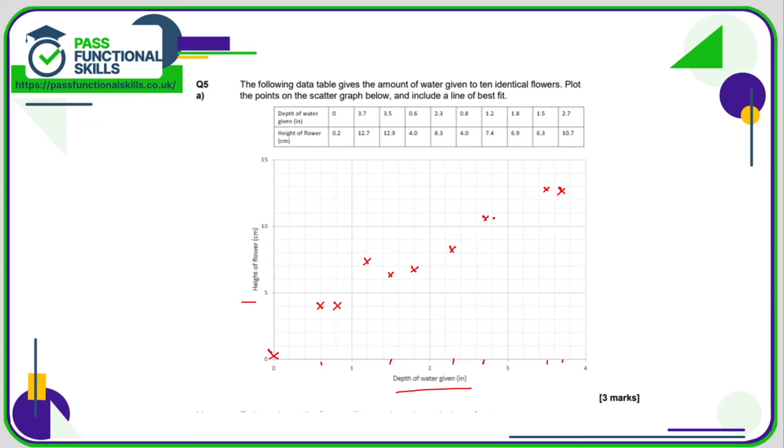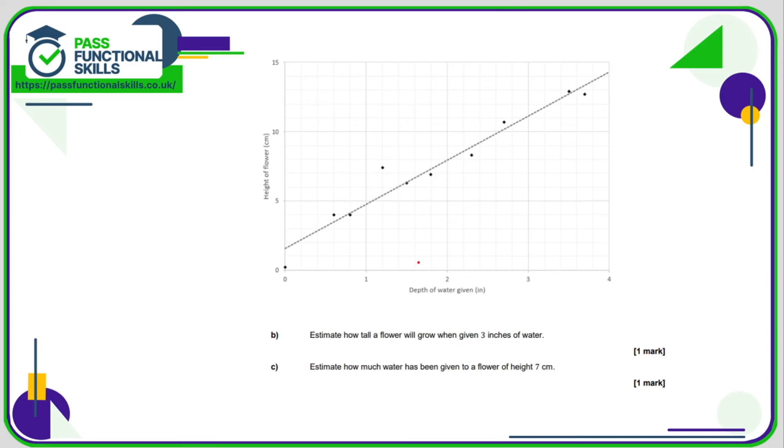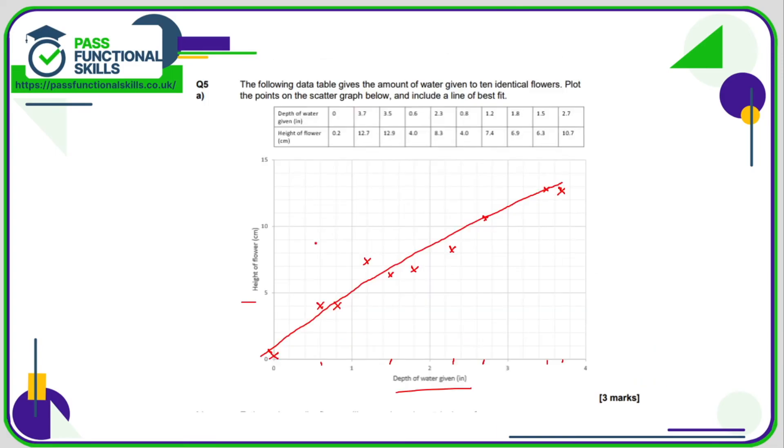Now we need to draw in a line of best fit, a line that goes through the center of these dots. Again that's a pretty awful one because it curls a little bit but it should be a straight line. This is what the actual line of best fit should look like.